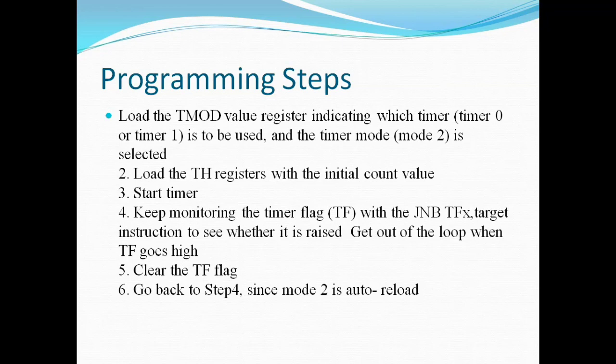Once you load this, you have to start the timer and keep monitoring the timer flag with JNB instruction. When this condition becomes false, it will get out of the loop when TF goes high. Once it comes out of the loop, then you have to clear the TF flag and go back to step 4. That means you have to keep monitoring the overflow flag instead of going to step 2. As it is auto-reload, the value will get reloaded automatically into the TL register from TH register.